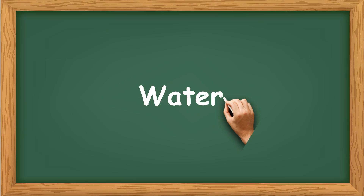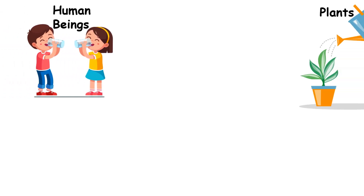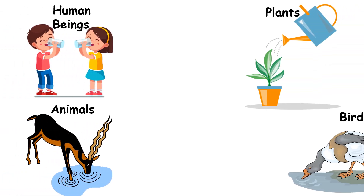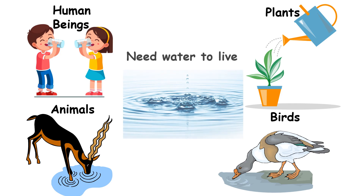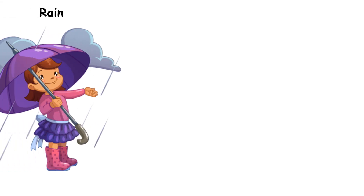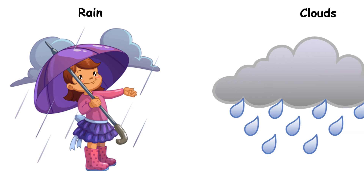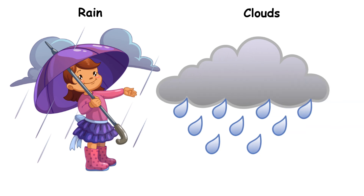Water. Human beings, plants, animals and birds need water to live. Rain is the main source of water. Rain is droplets of water that fall from clouds.